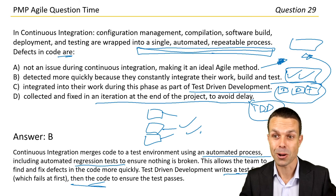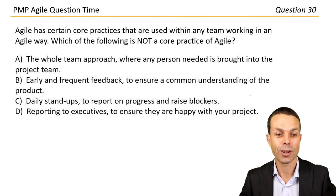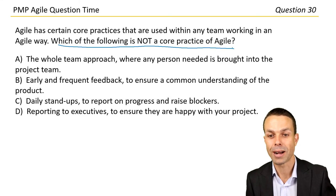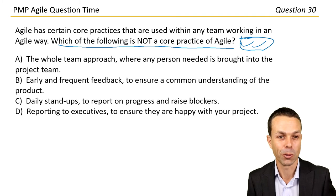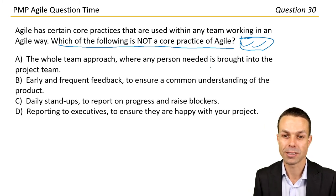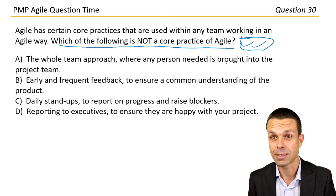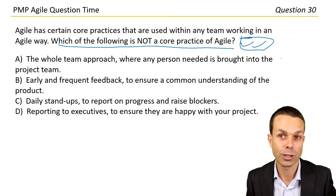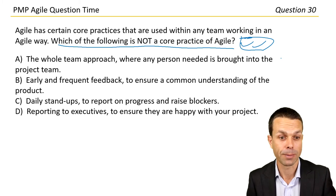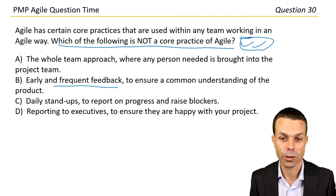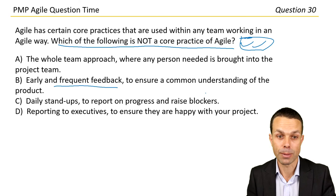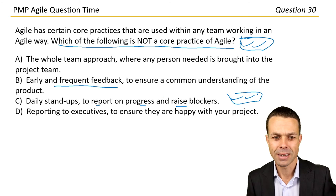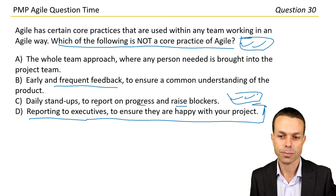Which of the following is not a core practice of agile? Options include: the whole team approach where anyone needed is brought into the project team; early and frequent feedback; daily stand-ups to report progress and raise blockers; and reporting to executives to ensure they're happy with your project. The first three are all agile approaches.